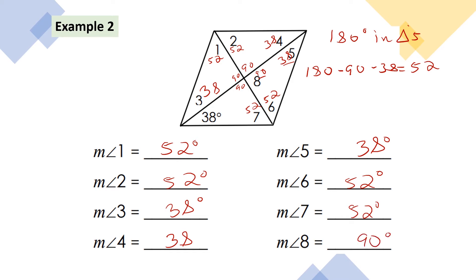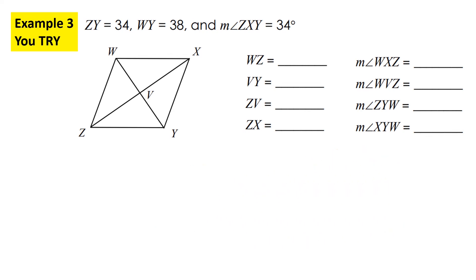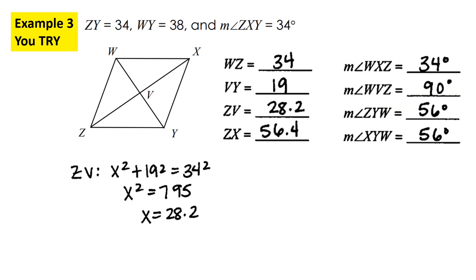Here's an example I'd like you to try on your own — it combines finding sides and angles. Look at the information given, label the rhombus, and try it yourself. Go ahead and pause the video. Hopefully you got the answers correct. For x, we used the Pythagorean theorem to find the measure of ZV. If you didn't get it right, pause and analyze the work a bit more.